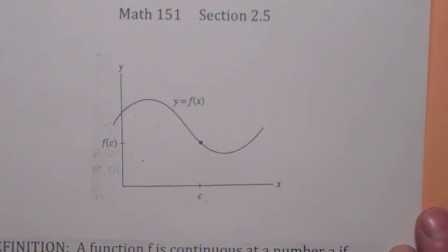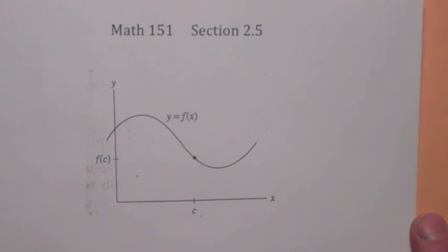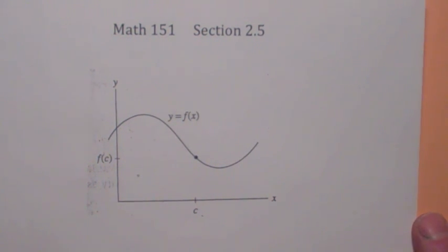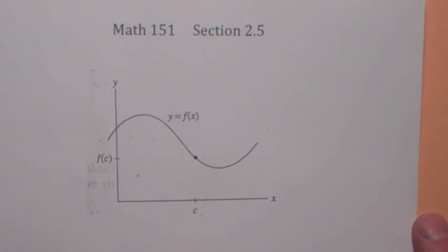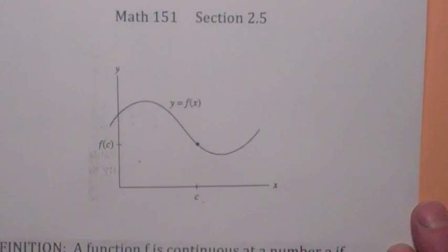We're going to first talk about what it means for a function to be continuous at a point. In this example, this function is continuous at x equals c because, first of all, f is defined. Secondly, the limit exists as x gets close to c. And thirdly, they're the same — the limit equals the function value.